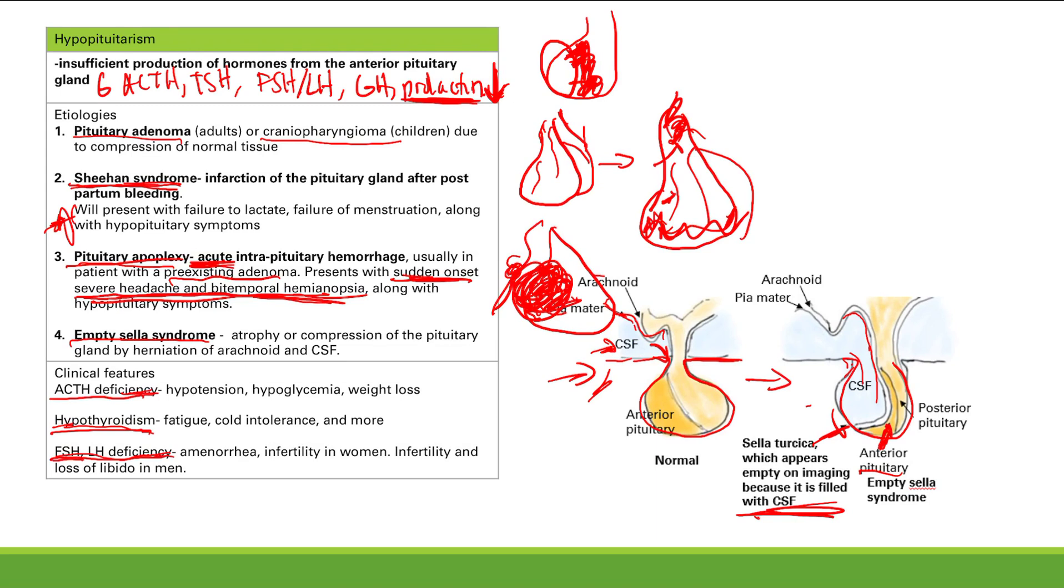Again and again, you see amenorrhea, infertility in women, infertility, and loss of libido in men. So this is easy. You already know this. And this stuff you're going to learn later when we talk about cortisol and when we talk about thyroid. So that's hypopituitarism.